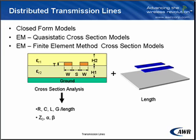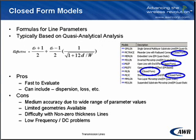The way the models differ is the method in which they get these parameters. We have closed-form models and two different forms of EM models. The closed-form models basically use a formula, typically taken from the literature and possibly modified to make it more accurate. The pros of these models is they're fast to evaluate, and they can include many effects like dispersion and loss. Typically, these formulas are either developed from simplified forms of Maxwell's equations or possibly curve-fit to numerical data.